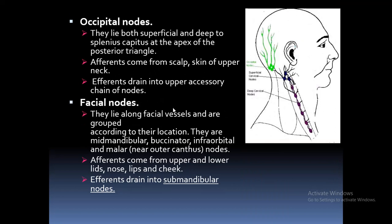The occipital nodes lie both superficial and deep to the semispinalis capitis at the apex of the posterior triangle. Their afferents come from the scalp and skin of upper neck; efferents drain into the upper accessory chain of nodes. The facial nodes lie along the facial vessels and are grouped by location: mid-mandibular, buccinator, infraorbital, and malar nodes. Their afferents come from the upper and lower lids, nose, lips, and cheek; efferents drain into the submandibular nodes.